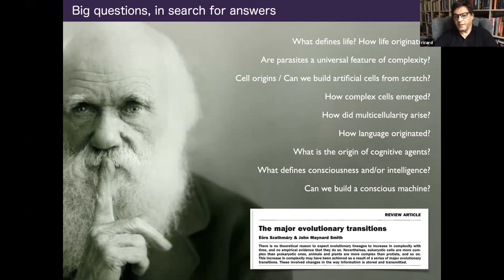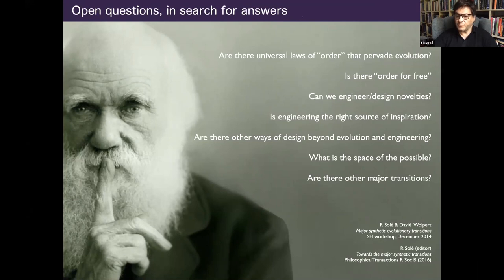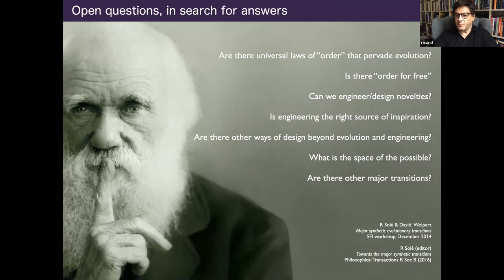Theory and experiments provide huge insight into major transitions, and they allow us to reformulate some of the questions under a more theoretical perspective - asking whether there are universal laws that pervade biology but might be more general than biology. Is there order for free? Are there mathematical and formal rules that pervade almost every complexity imaginable, such that some order we see in nature is a consequence of those rules rather than selection? And can theory allow us to define the whole space of possibilities?